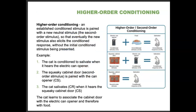As Pavlov studied classical conditioning further, he looked at higher order conditioning. This is when an established conditioned stimulus is paired with a new neutral stimulus — called the second order stimulus — so that eventually the new stimulus also elicits the conditioned response without the initial conditioned stimulus being presented. For example, a cat conditioned to salivate when hearing the electric can opener: the squeaky cabinet door becomes a second order stimulus paired with the can opener, so the cat learns to associate the cabinet door with the can opener and therefore with the food.